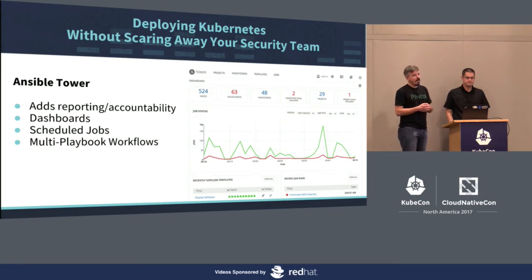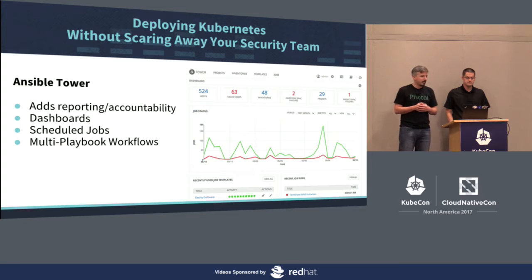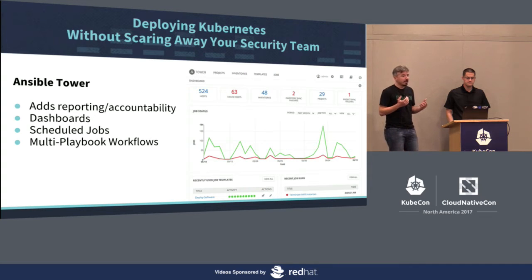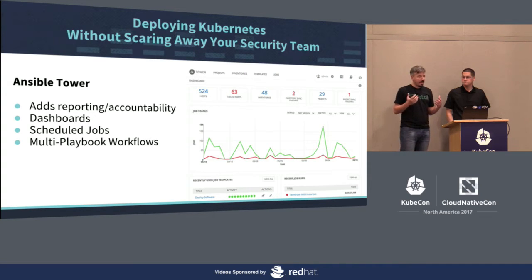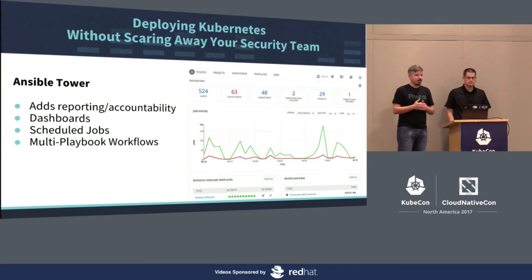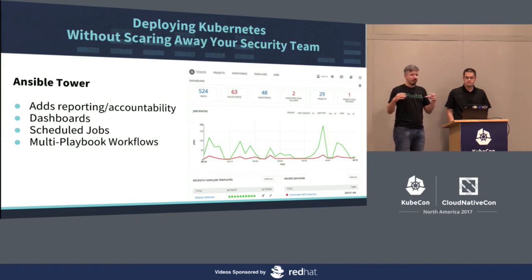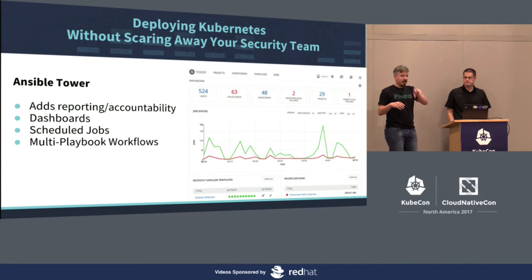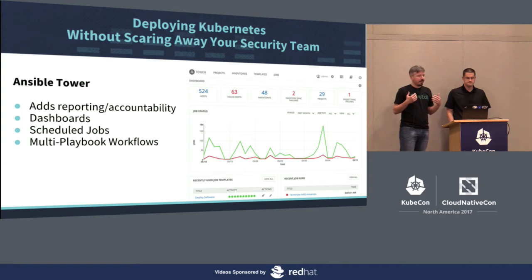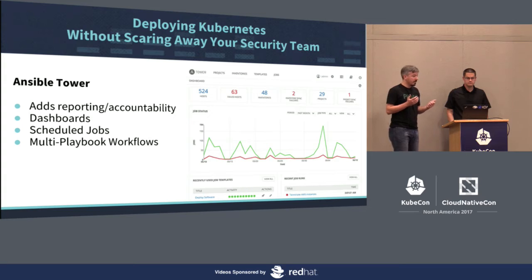Ansible Tower is a commercial product from Red Hat — though they now have an open source version. For large organizations that need extra access control and a NOC with buttons to press to run tasks, you can join several playbooks and roles together in a pipeline workflow. It has a lot of visibility into what's going on, and a lot of people find it useful.